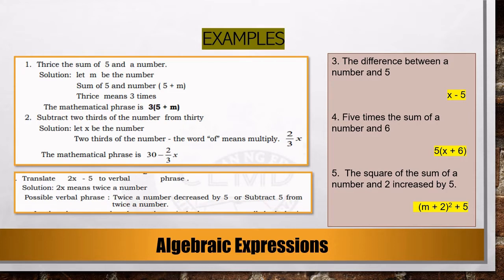Now let us look at examples. Number one: 'thrice the sum of five and a number.' Let us represent the number as m. The sum of five and a number is written as (5 + m) — we use plus because of the word 'sum.' Thrice means three times, so the mathematical phrase is 3(5 + m).